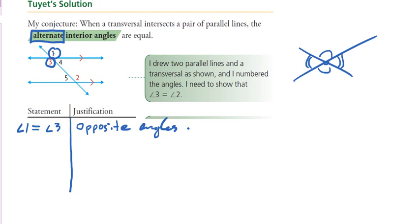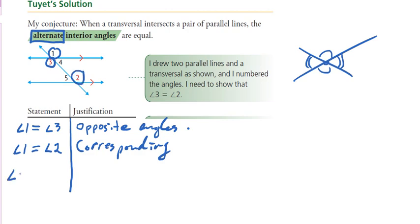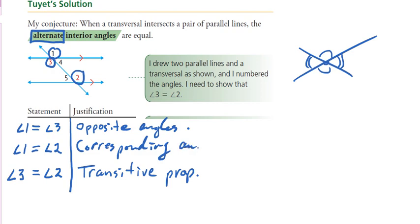What about angle 1 and angle 2? They are equal — and why? Corresponding angles. Very good, corresponding angles. So what can be said about angle 3 and angle 2? They're equal. Why? Because they both equal a third angle — angle 1. If they both equal the same thing, that's called the transitive property, which we talked about last chapter.